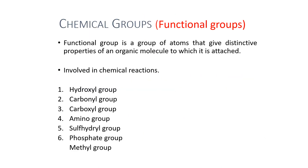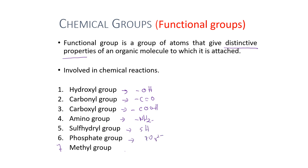Functional groups are groups of atoms that give distinctive properties to the organic molecule to which they are attached. There are several types: hydroxyl (OH), carbonyl (C=O), carboxyl (COOH), amino (NH₂), sulfhydryl (SH), phosphate (PO₄²⁻), and methyl (CH₃). All these functional groups are bonded or attached to an organic molecule.